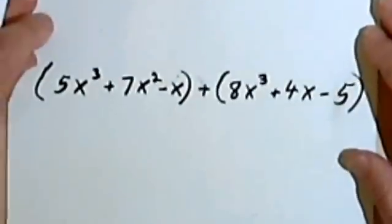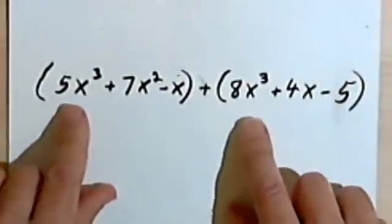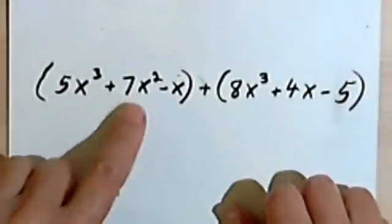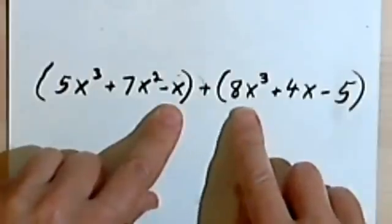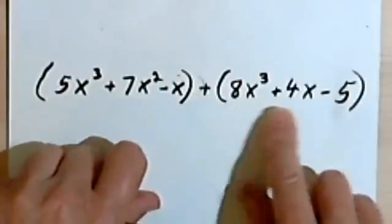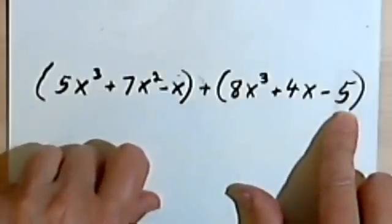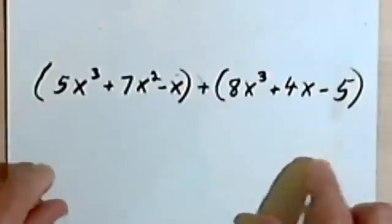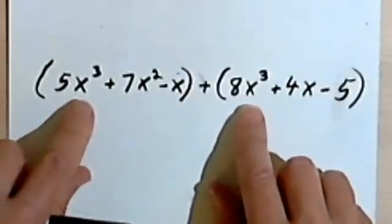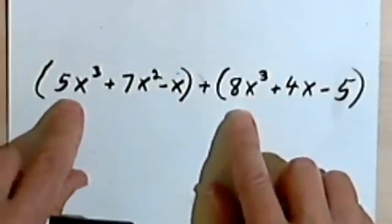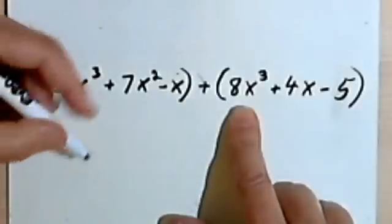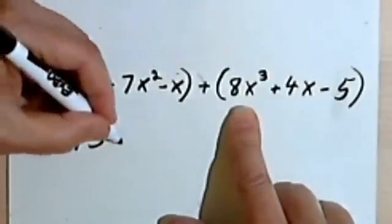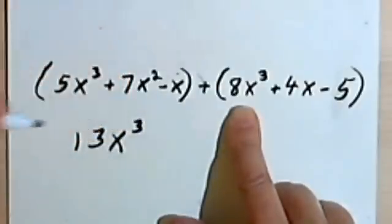Here's another addition problem. So we've got 5x³ + 7x² - x, and we're adding 8x³ + 4x - 5. So let's start with our highest exponent, which is 3. So we've got 5x³ + 8x³. That means we have 13 altogether. So I've got 13x³.